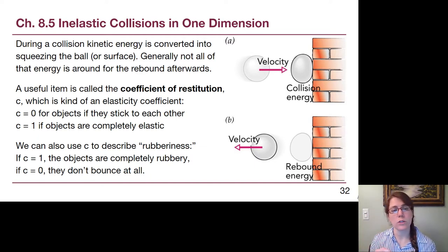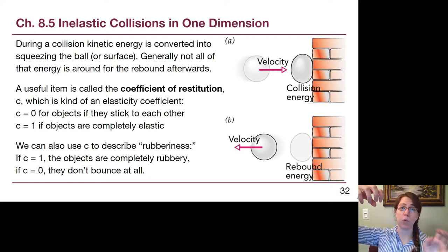So the coefficient of restitution is called c, where it's kind of like a rubberiness value between 0 and 1. 0 is where nothing is bouncy at all, the objects stick together. If we imagine holding a handful of mud, we drop it onto the table, it goes splat, and it sticks. It doesn't bounce. That would be c equals 0. If we have a perfectly rubbery super ball, we drop it from the table, it bounces, and it comes right back up to our hand. It didn't lose any energy whatsoever. And that would be a c value of 1. There's lots of in-between here, but that's the main idea.